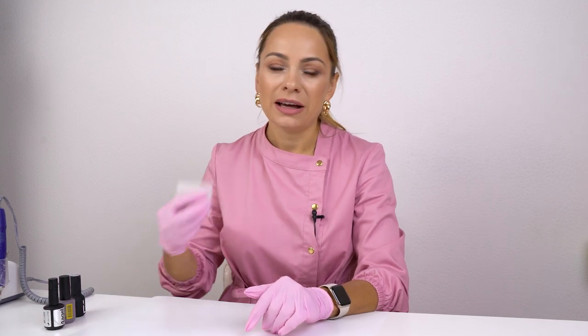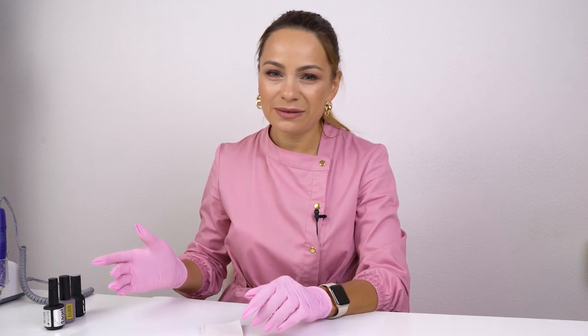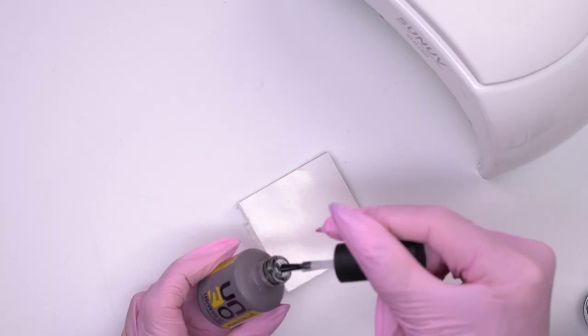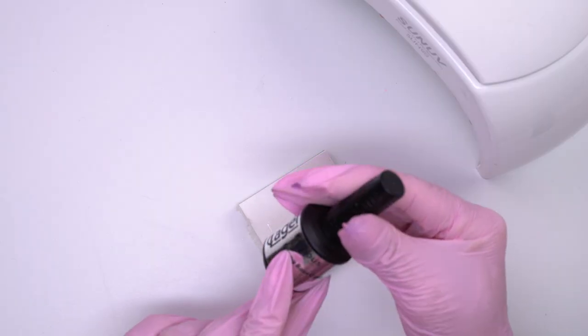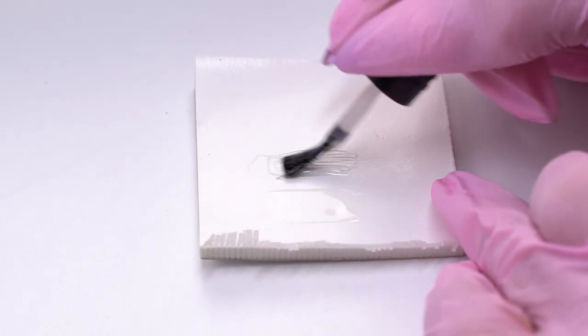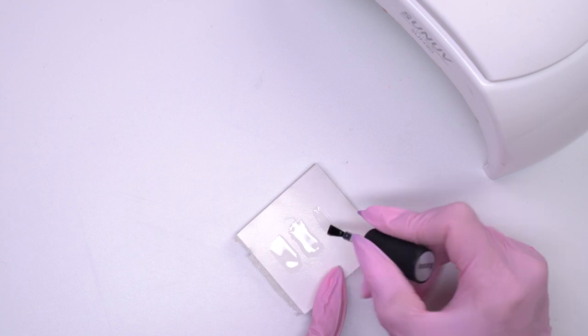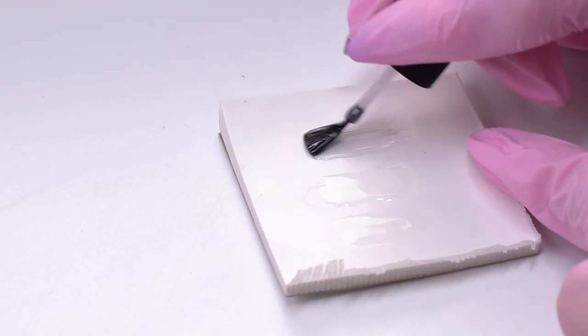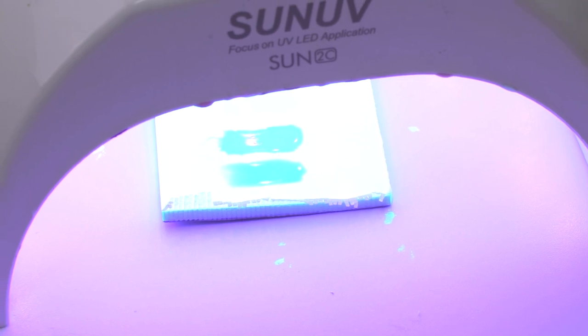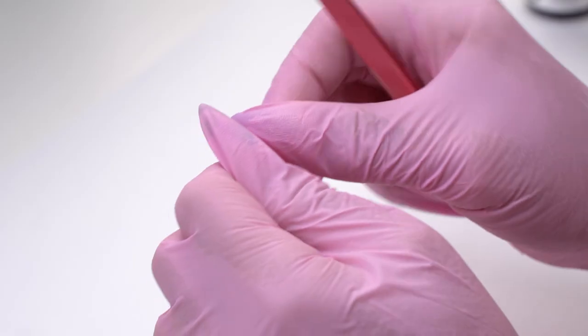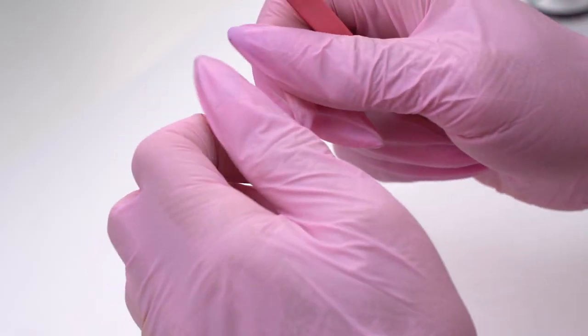We will need some glossy paper sheets, base coats, and of course a UV lamp. Apply a thin layer of each of the base coats, the same amount you normally use for the alignment. Cure in the lamp for the required time minus 30 seconds. Then remove the base coat from the palette using tweezers and start bending it.